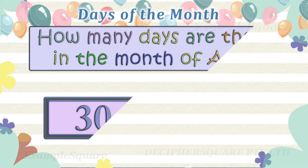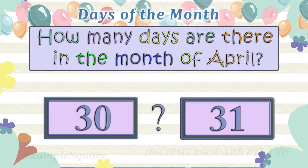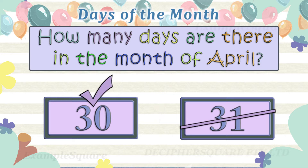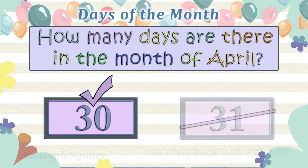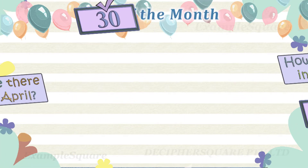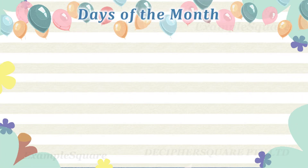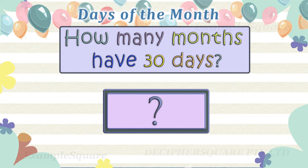How many days are there in the month of April? There are 30 days in the month of April. How many months have 30 days? There are four months with 30 days.